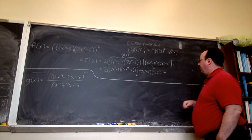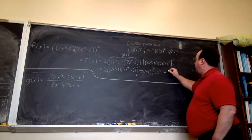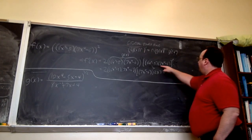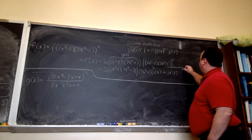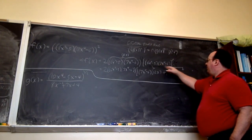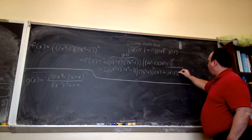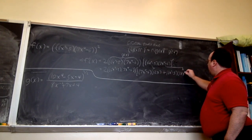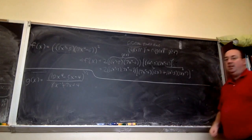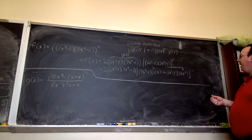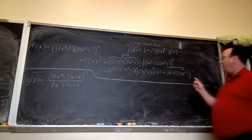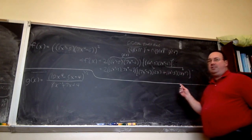Continuing with the product rule, plus the first function (6x² − 5) times the derivative of the second function, which gives 4 times 7 times x³, so 28x³. Using the general power rule and the product rule together, we are able to compute this derivative. We could go through a lot of trouble to simplify this.